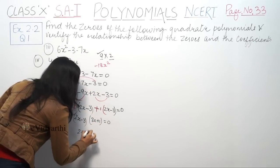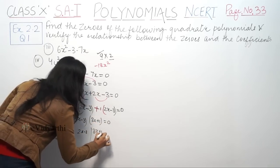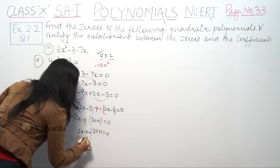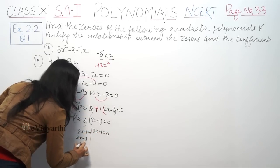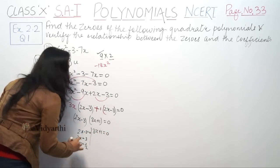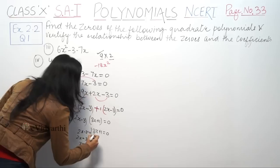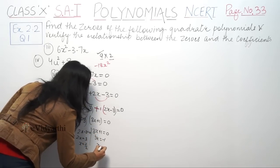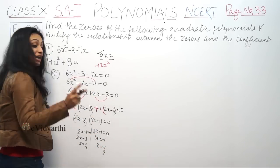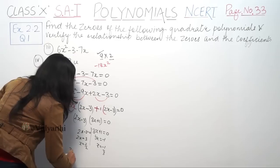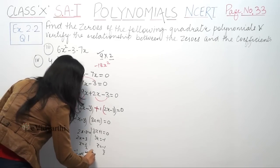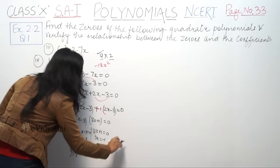So the factors are (2x minus 3) and (3x plus 1) equal to 0. Setting each factor to zero: 2x minus 3 equals 0 gives x equals 3 by 2, and 3x plus 1 equals 0 gives x equals minus 1 by 3. So the two zeros are 3 by 2 and minus 1 by 3.